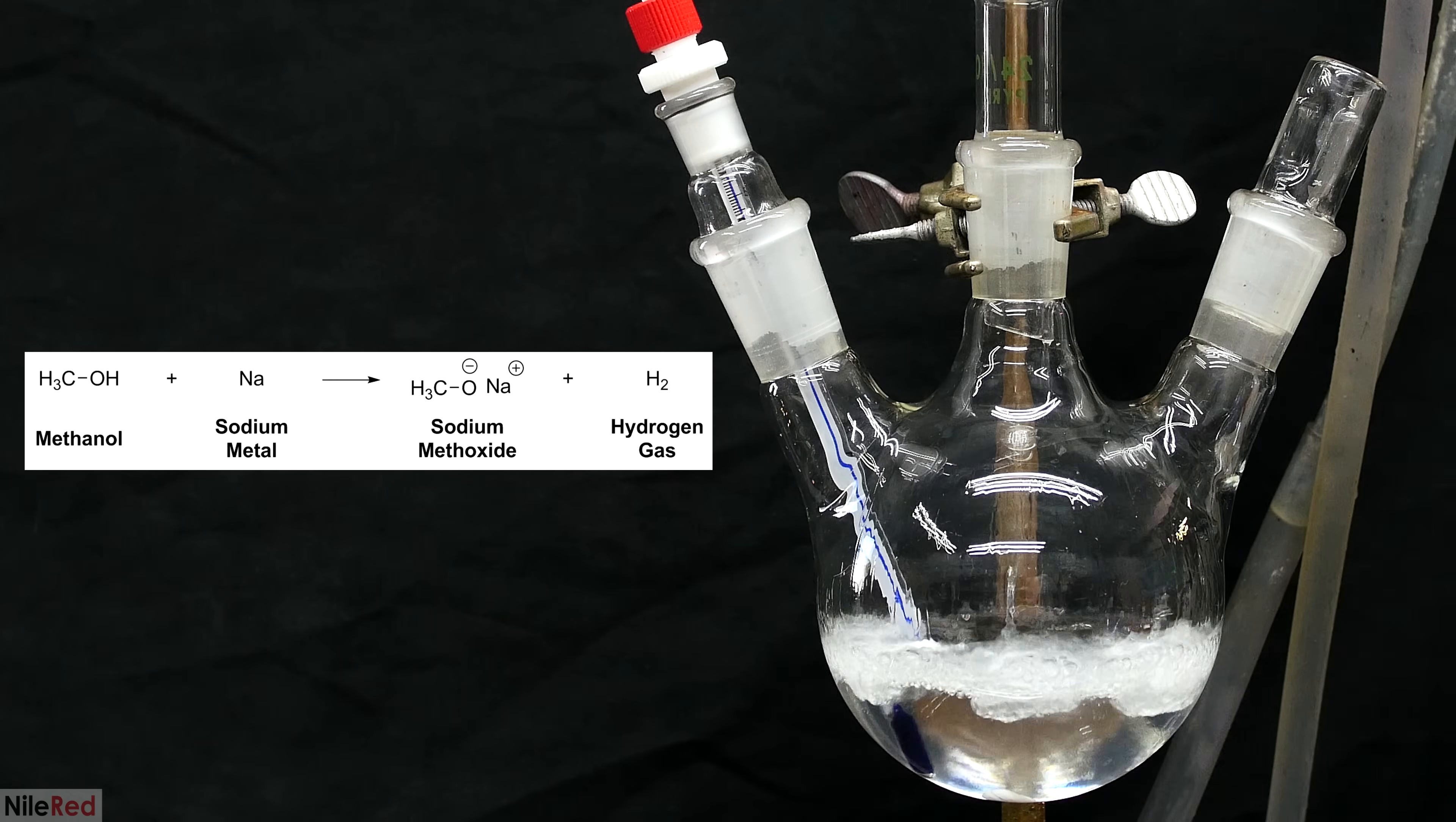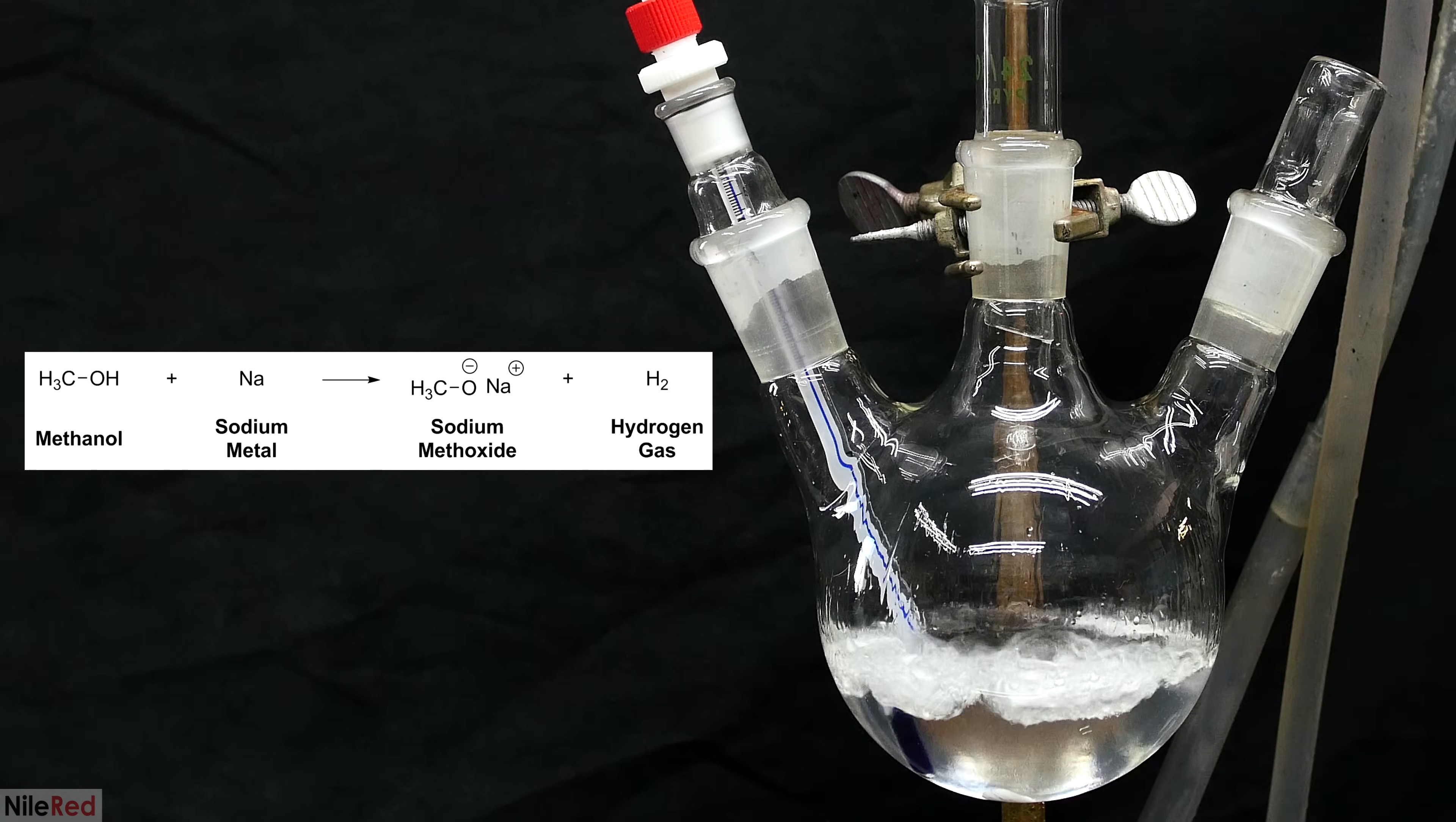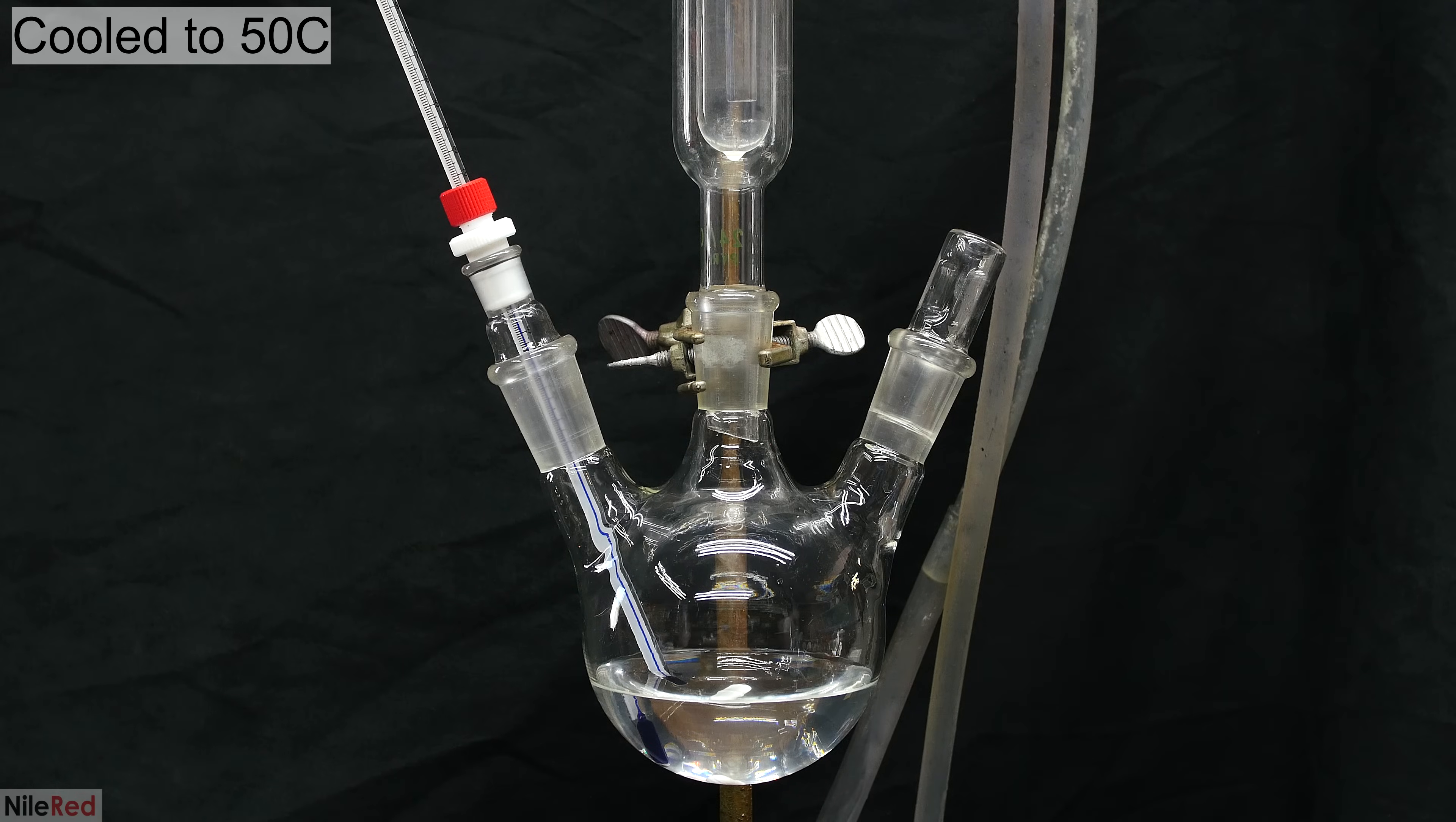Anyway, what we're doing here is reacting the sodium with the methanol to form sodium methoxide and hydrogen gas. The hydrogen gas bubbles away, and this leaves us with just sodium methoxide, which dissolves into the methanol. After several minutes, everything should be done reacting. This methanol solution is still pretty hot, so we let it stand until it cools down to below 50°C.